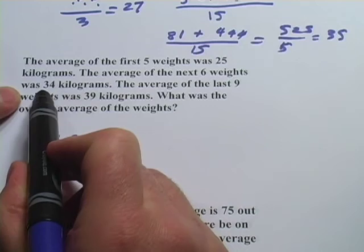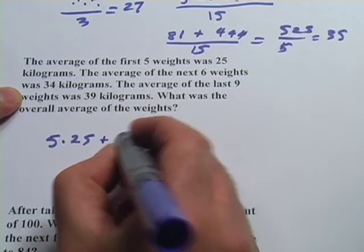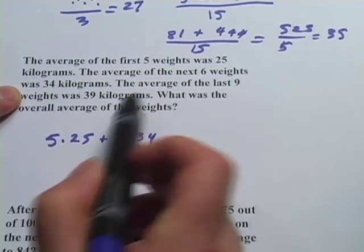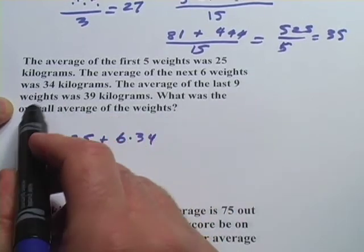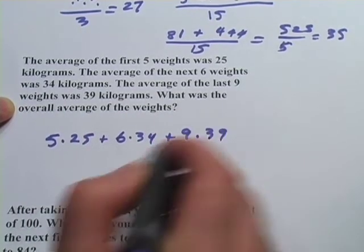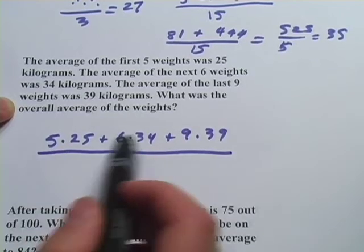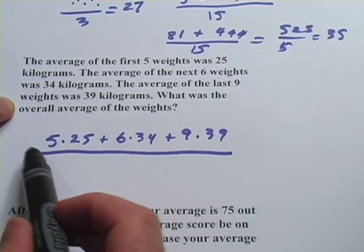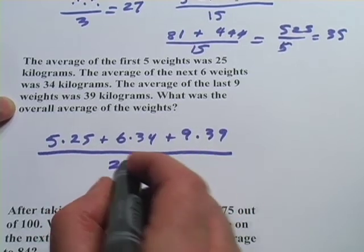The next chunk, I had six weights that averaged 34. I'm going to call that six times 34. And the next chunk, nine, that averaged 39, I'm going to call that nine times 39. This has to be divided by the total number of numbers, and there were five and six and nine, I believe that's 20.